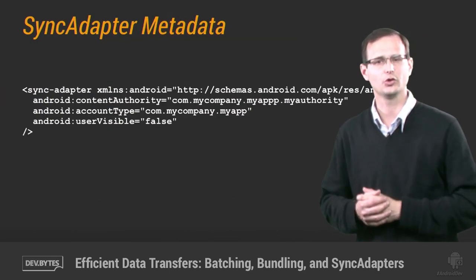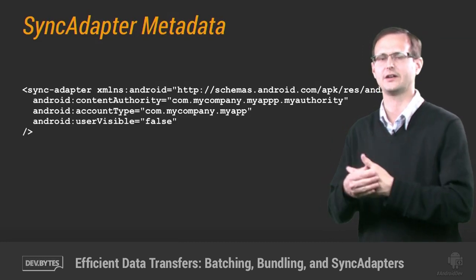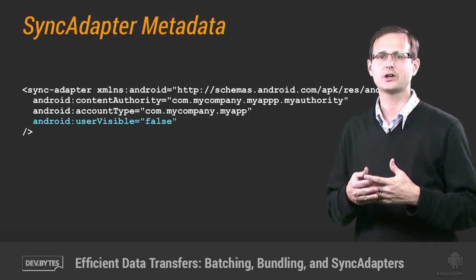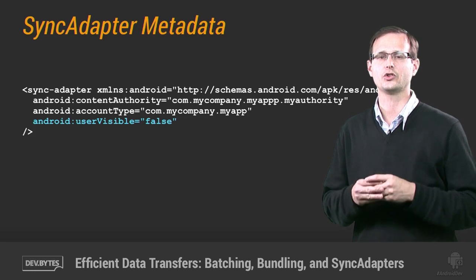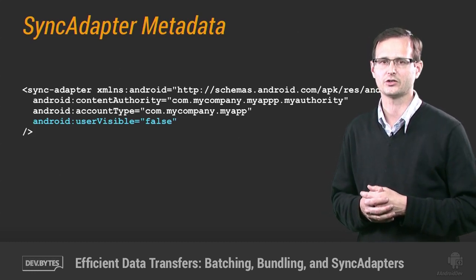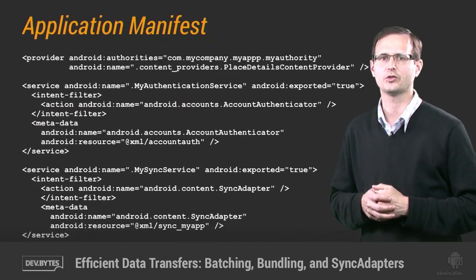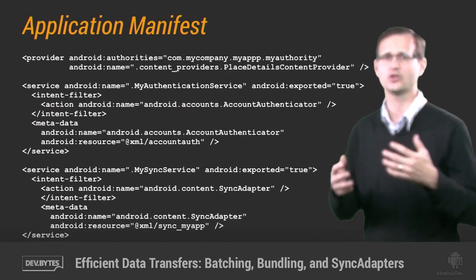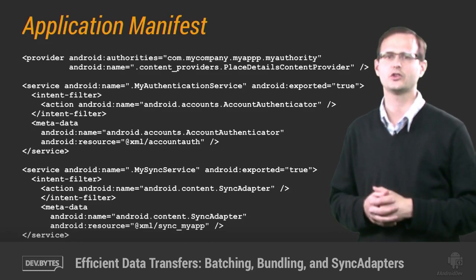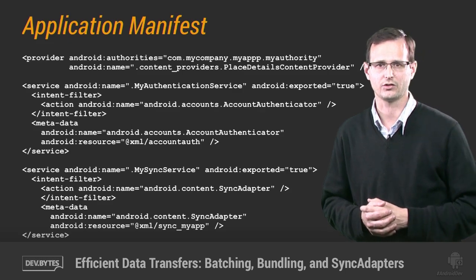Next, create the metadata file for the sync adapter that will be used to associate a content provider and account type with it. Note that here I am marking the sync adapter as not user visible, so users won't be able to disable syncing from their global settings. Finally, add the new services and content providers to the application manifest, associating the sync adapter metadata with the sync adapter service and the account authenticator metadata with the account authenticator service.